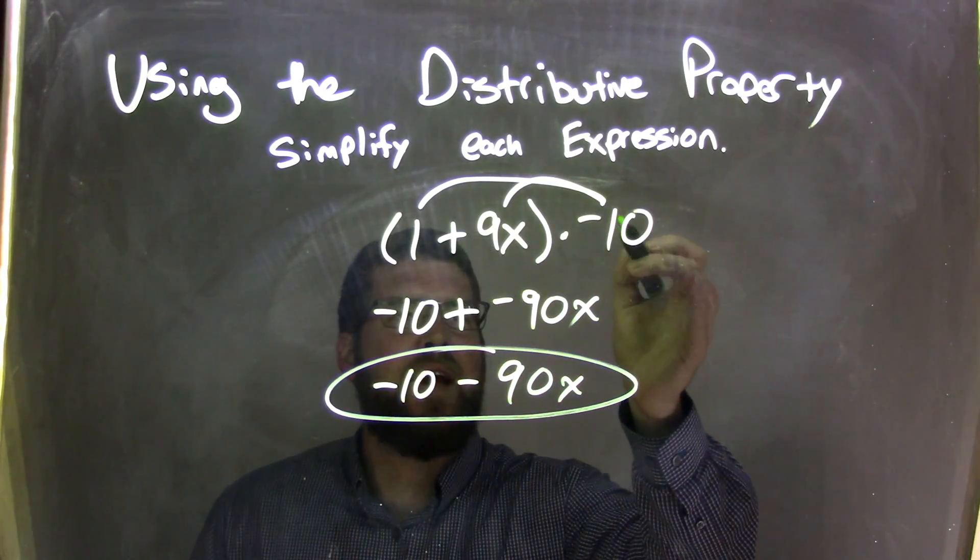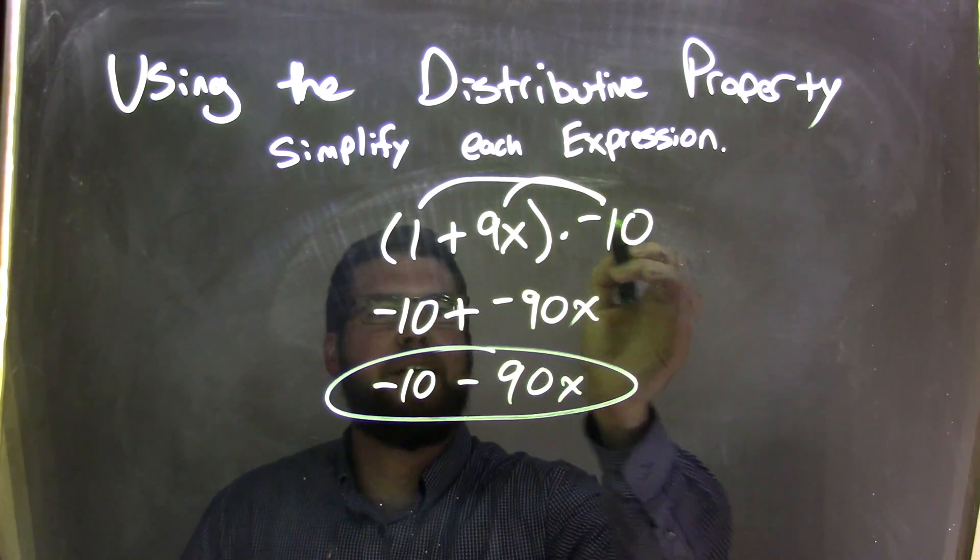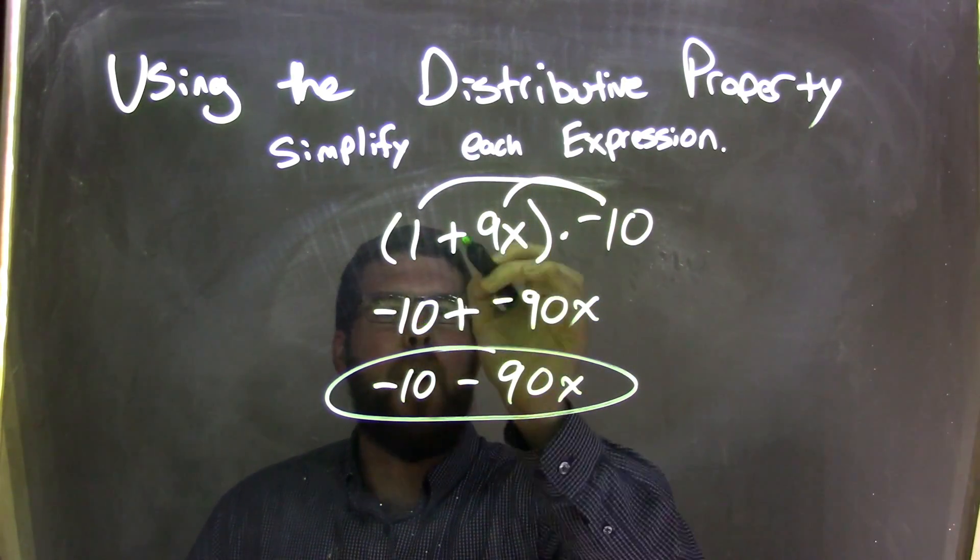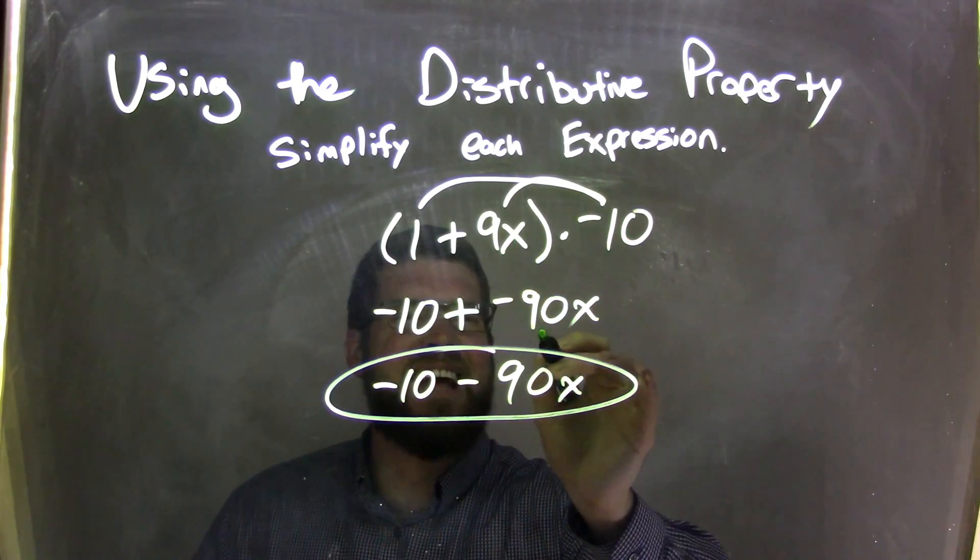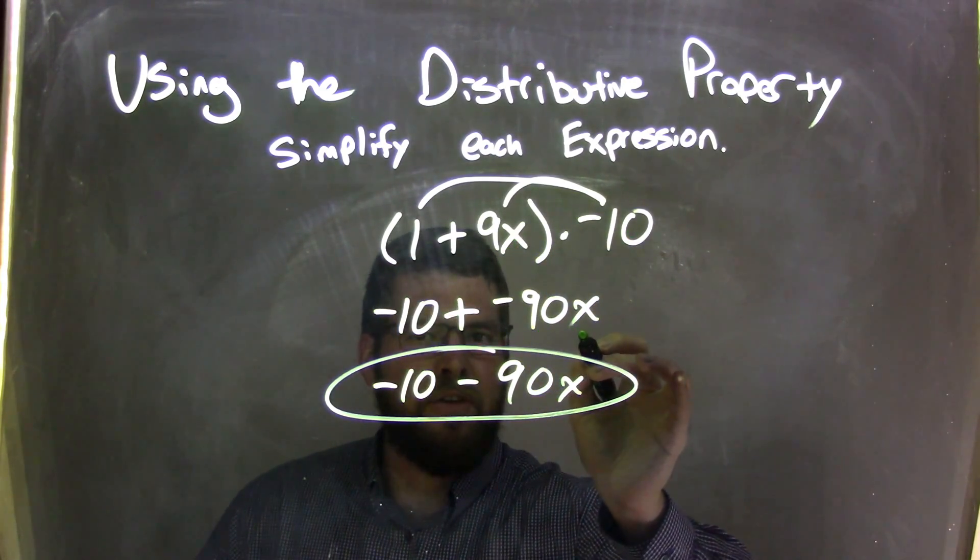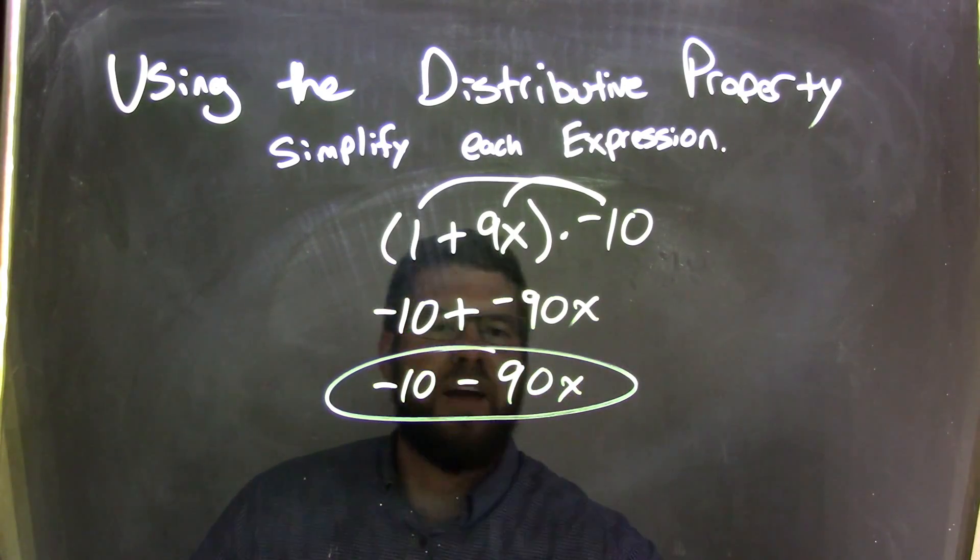Negative 10 on the outside. Negative 10 distributing. Negative 10 times 1, negative 10. Bring down the plus sign here. Negative 10 times 9x is negative 90x. So now we have negative 10 plus negative 90x.